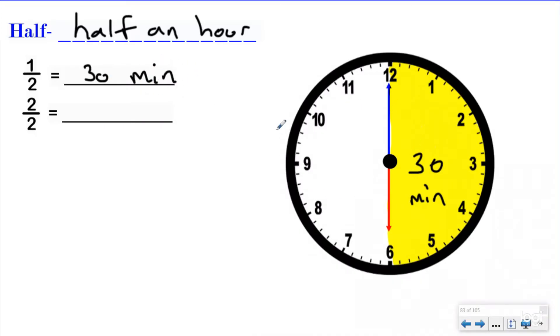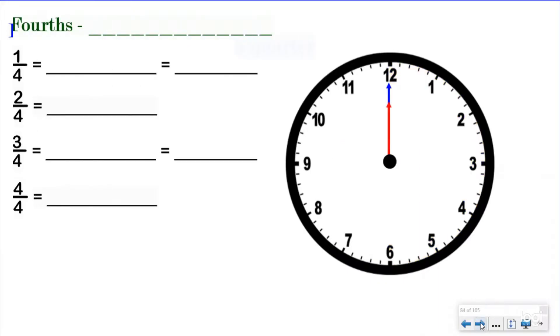And obviously if you have two halves — both parts — that would be 60 minutes, which is how many minutes are on the clock face for an hour.